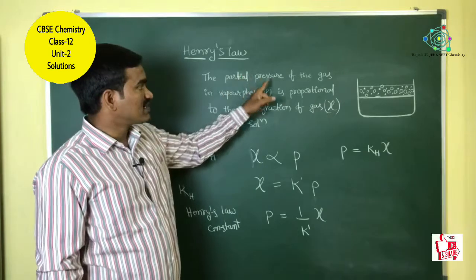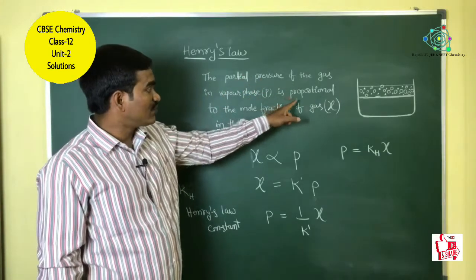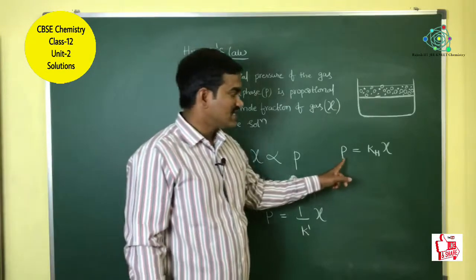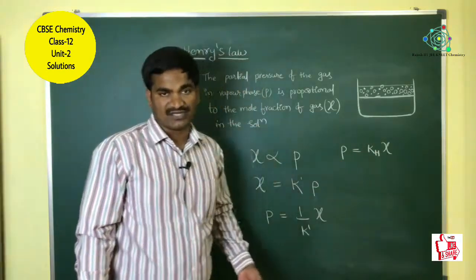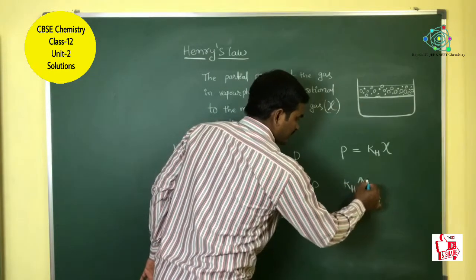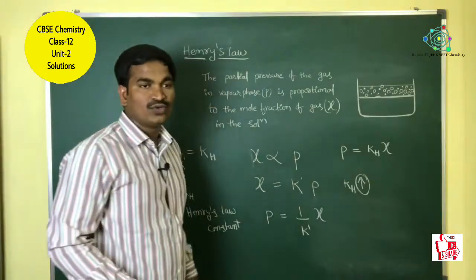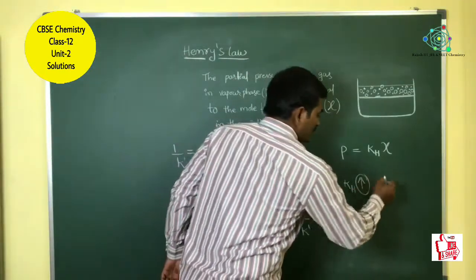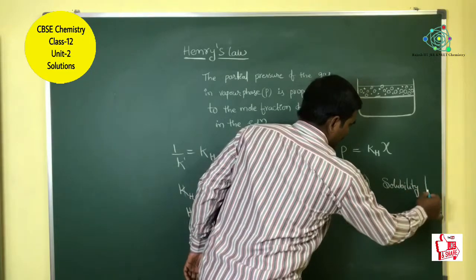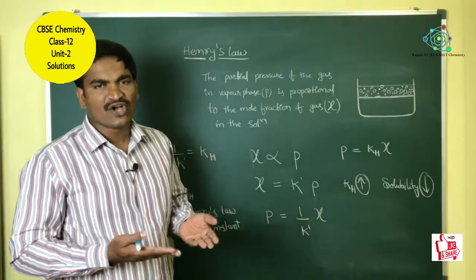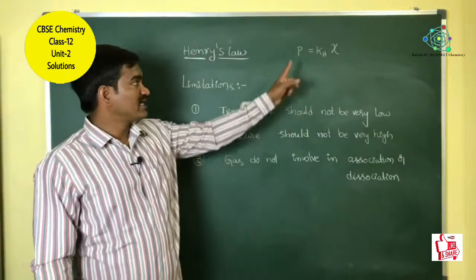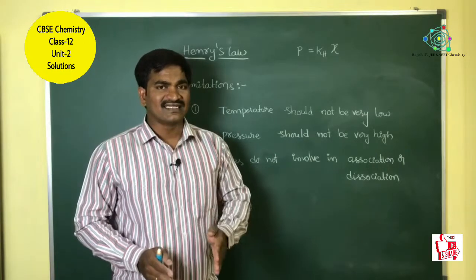The second expression states: the partial pressure of the gas in the vapor phase is directly proportional to the mole fraction of the gas in the solution. This expression P = K_H × χ is generally used for mixtures of gases. When the K_H value is high, the solubility of the gas is low; when the K_H value is low, the solubility is high. The mole fraction is considered as the solubility of the gas.